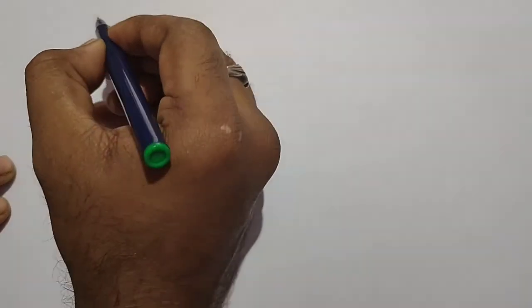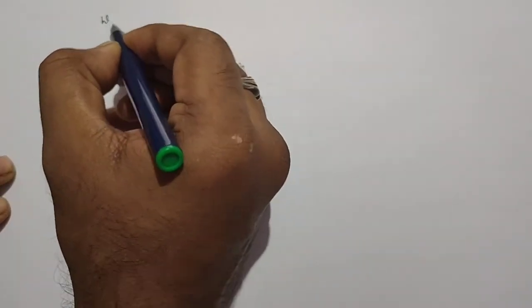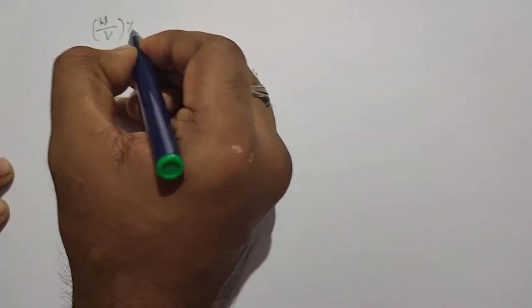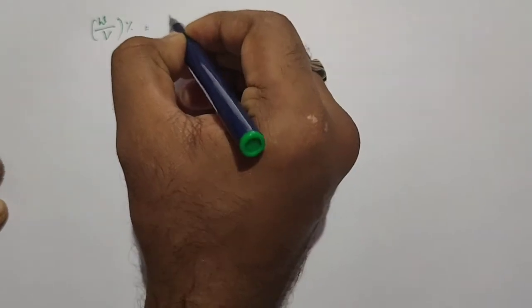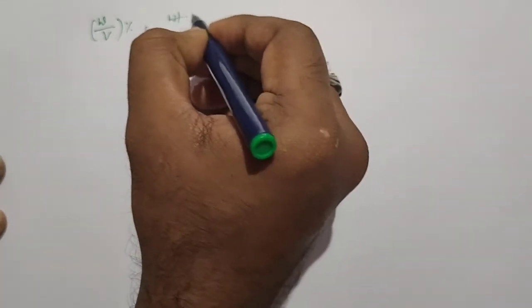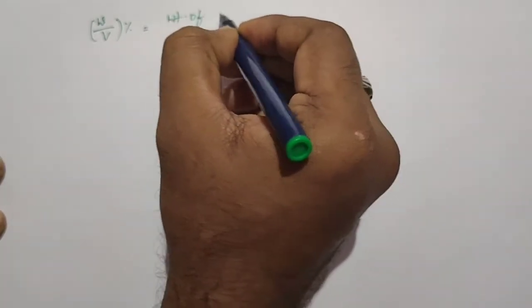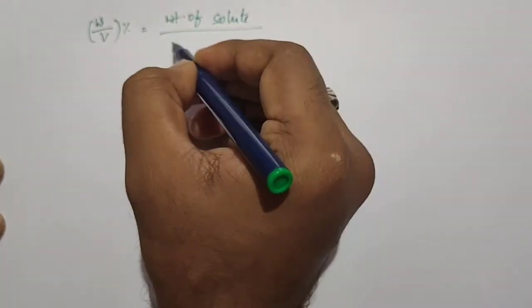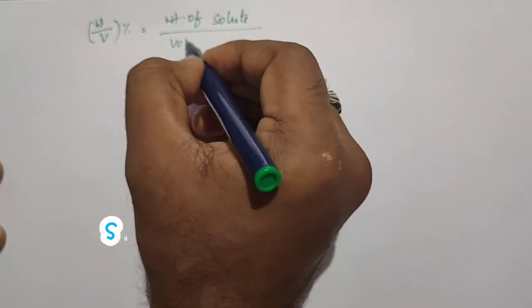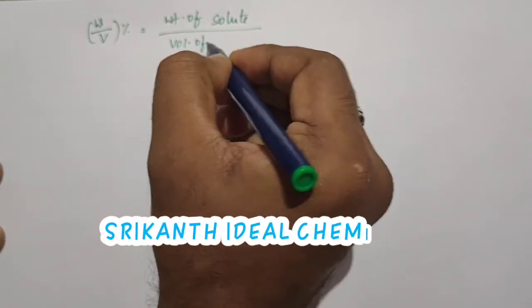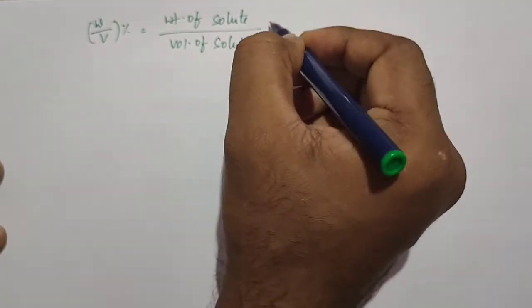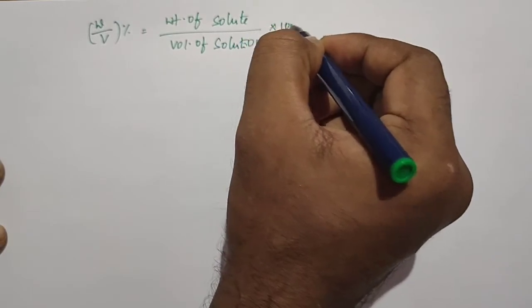The formula for weight-volume percentage: w/V = (weight of solute / volume of solution) × 100.